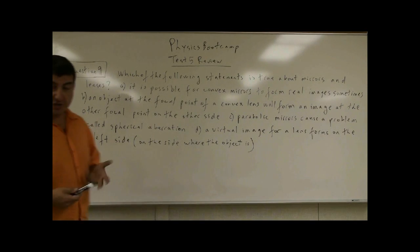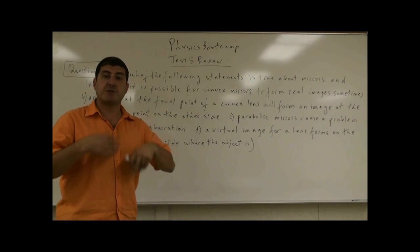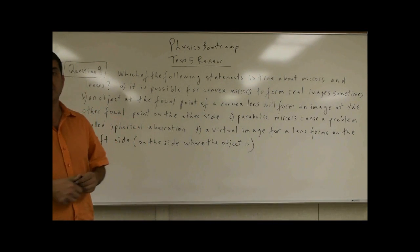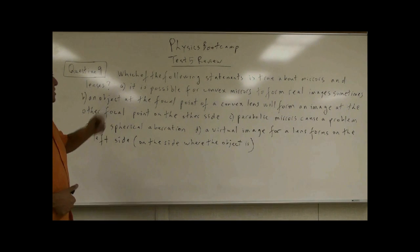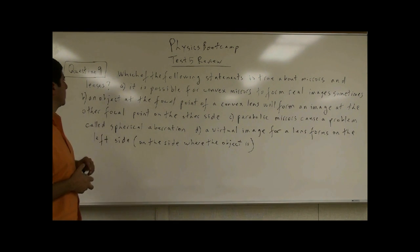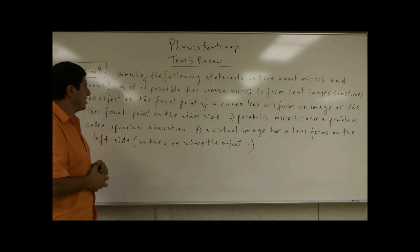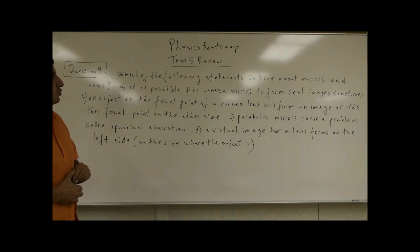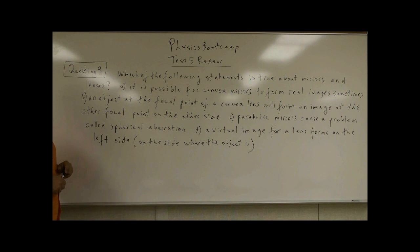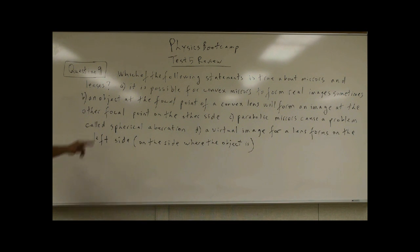Question 9 is also about lenses and mirrors. It says: which of the following statements is true about mirrors and lenses? A: It is possible for convex mirrors to form real images sometimes. B: An object at the focal point of a convex lens will form an image at the other focal point on the other side.